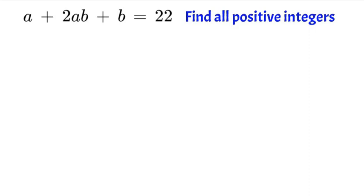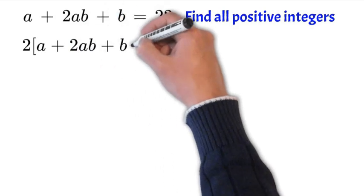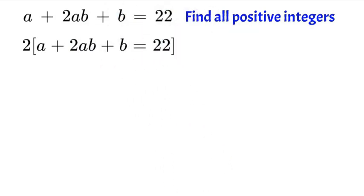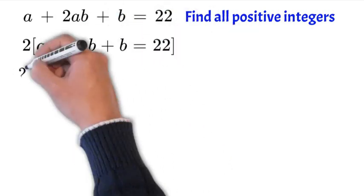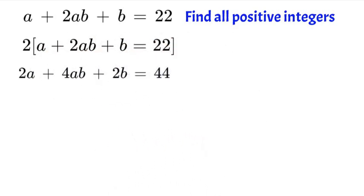So the first thing we're actually going to do is multiply this whole equation by 2. That way it'll be easier to work with and then we can try and factor out the left side of it. So let's first multiply by 2. We'll have 2a plus 4ab plus 2b equals 44.